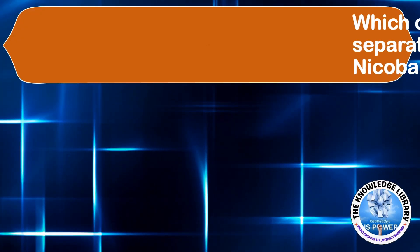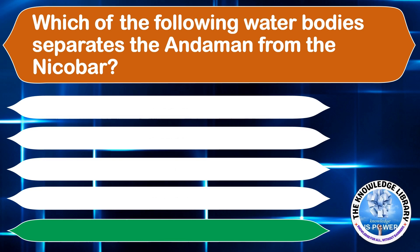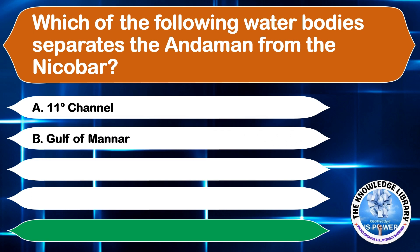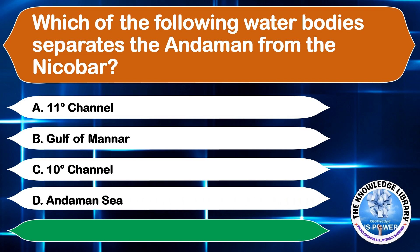Which of the following water bodies separates the Andaman from the Nicobar Islands? A. 11 Degree Channel, B. Gulf of Mannar, C. 10 Degree Channel, or D. Andaman Sea. The correct answer is option C, 10 Degree Channel.